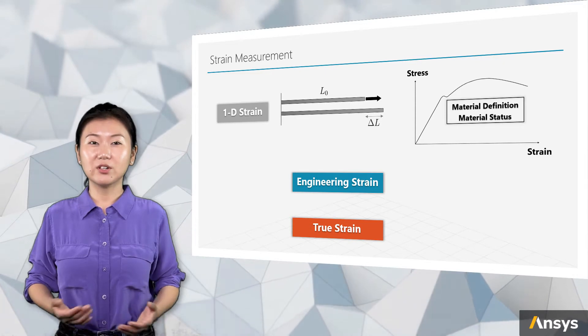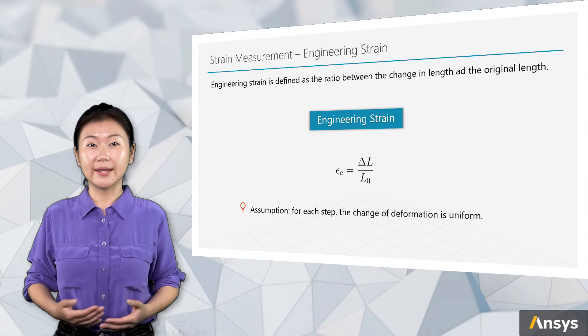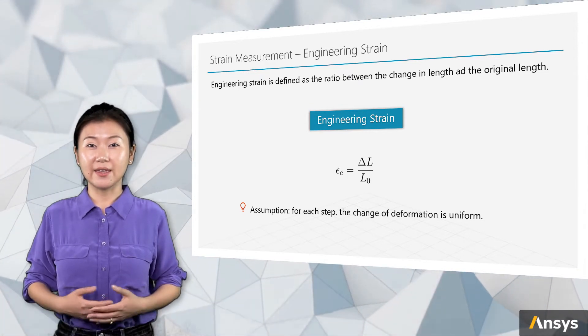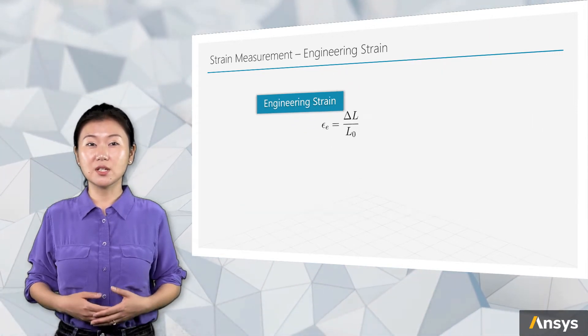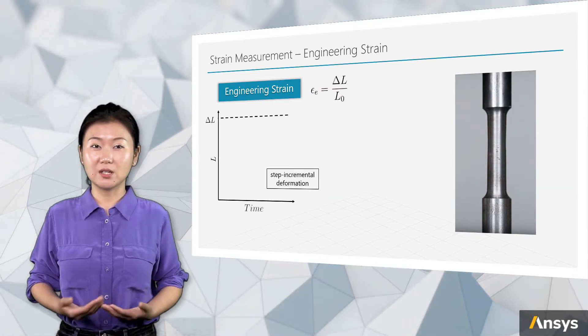Let's first have a look at the engineering strain. The definition of engineering strain is straightforward and intuitive. It's the ratio between the changing length and the original length. How does engineering strain get this form? Let's decompose the total change of length to multiple steps and have a deeper look at this expression.